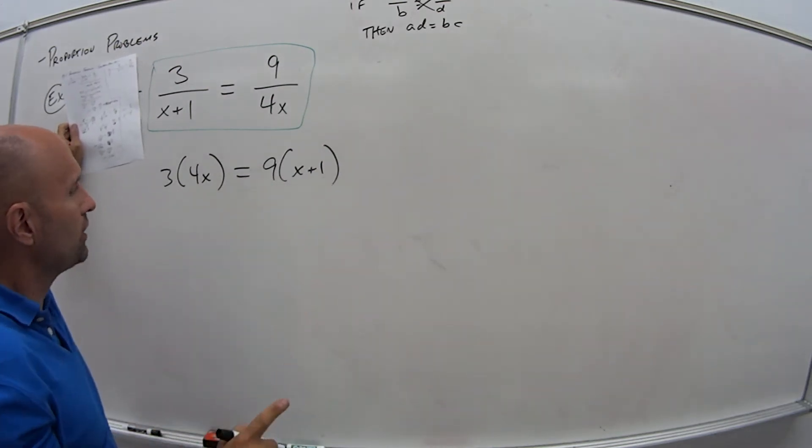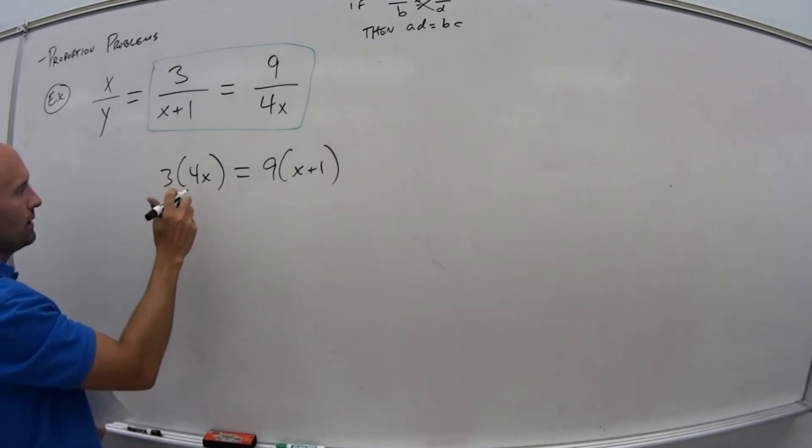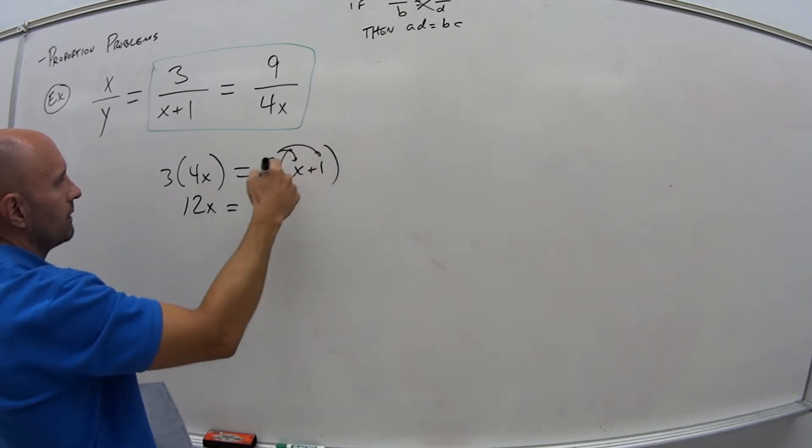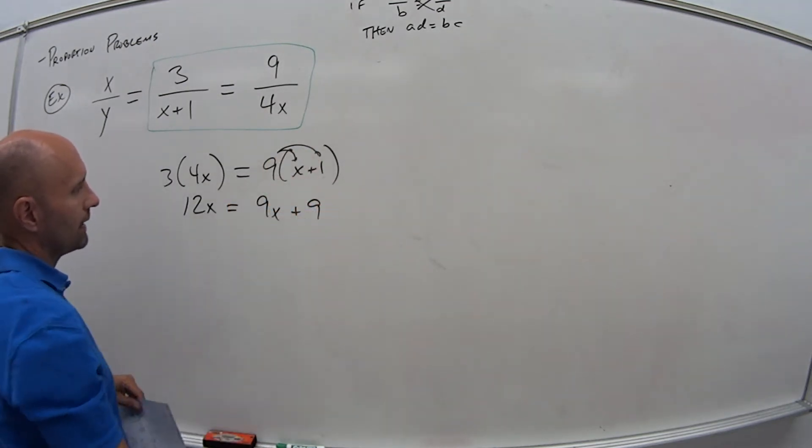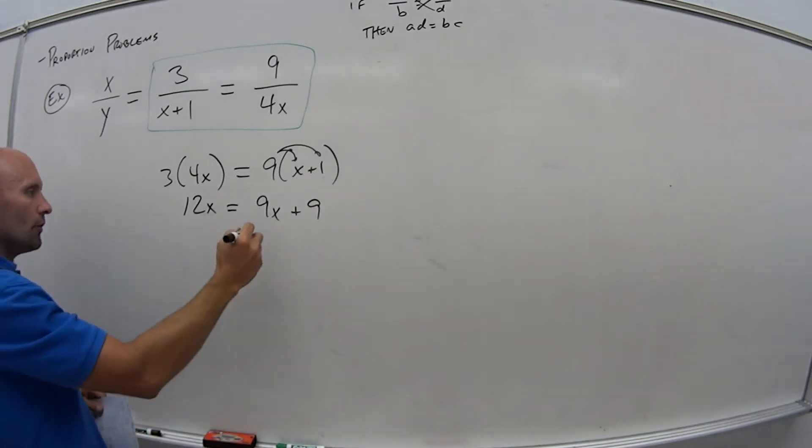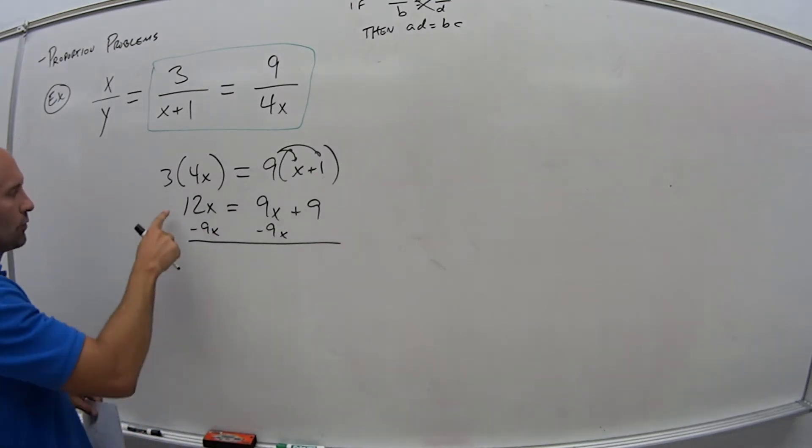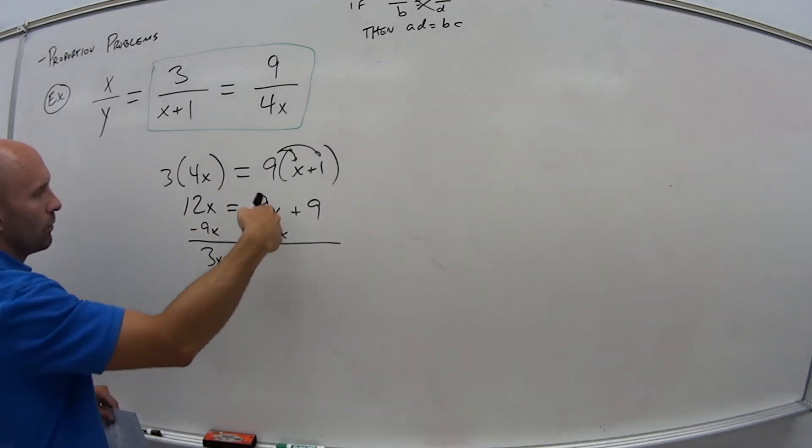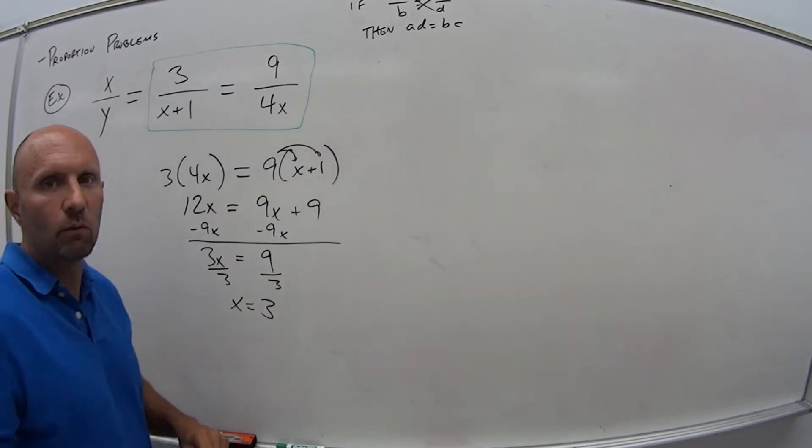So now what do I have? I have one equation with one unknown, so go ahead and solve for x. So here I have 3 times 4x, that's 12x, and then distribute my 9, 9 times x is 9x, 9 times 1 is 9. So subtract 9x from both sides. 12x minus 9x is 3x equals 9. Divide both sides by 3, tells me that x is equal to 3.